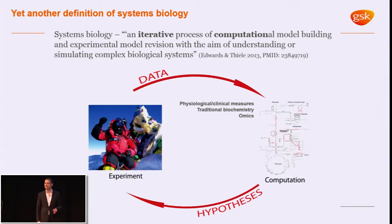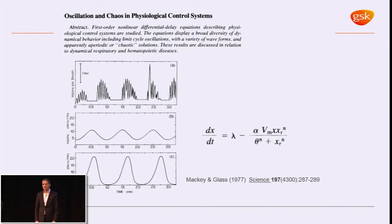I would argue that systems biology, to be true systems biology, requires a computational model of some kind in the middle of it. Omics methods, while they are a big part of what systems biology is, aren't by themselves systems biology.